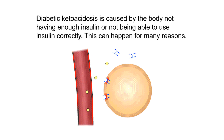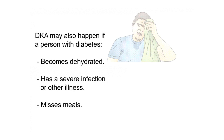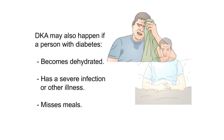Causes. Diabetic ketoacidosis is caused by the body not having enough insulin or not being able to use insulin correctly. DKA may happen if a person with diabetes does not take enough insulin or misses one or more doses. If you have diabetes, make sure you understand how to manage the condition and ask your health care provider how often you should take insulin. DKA may also happen if a person with diabetes becomes dehydrated.